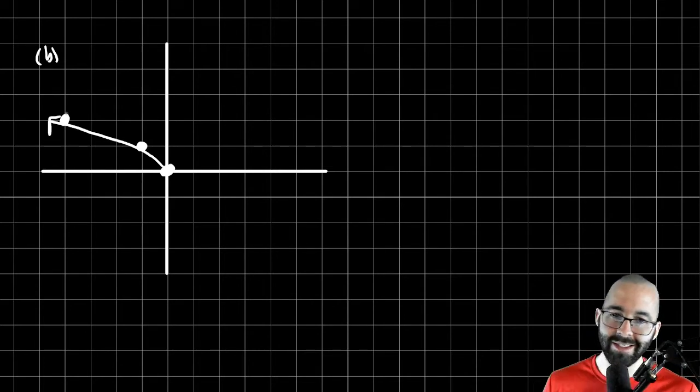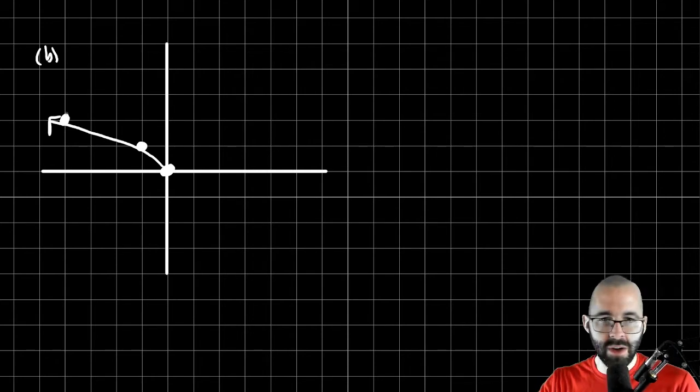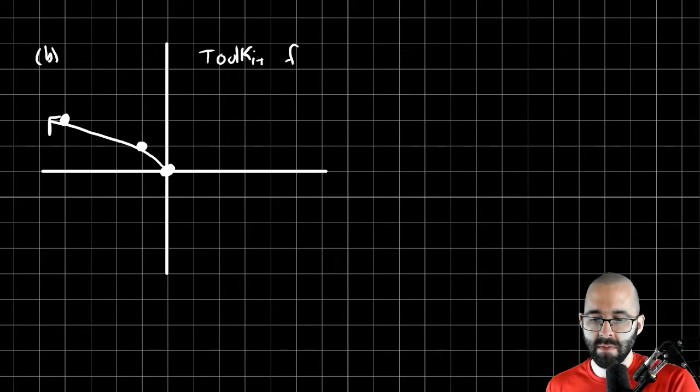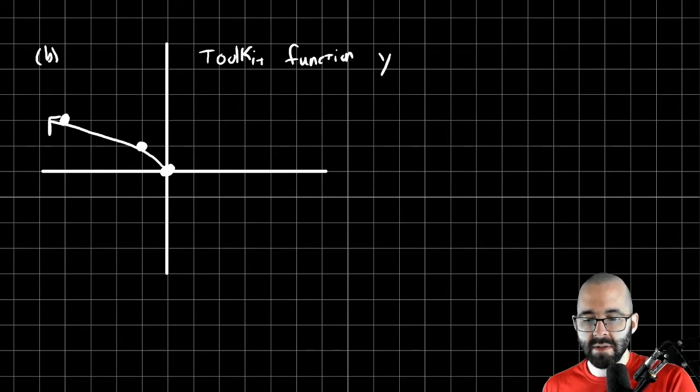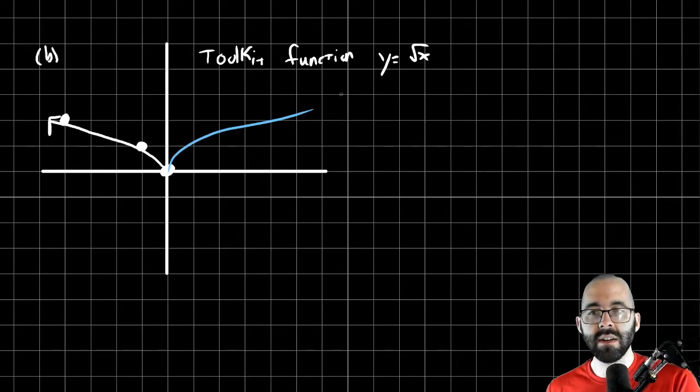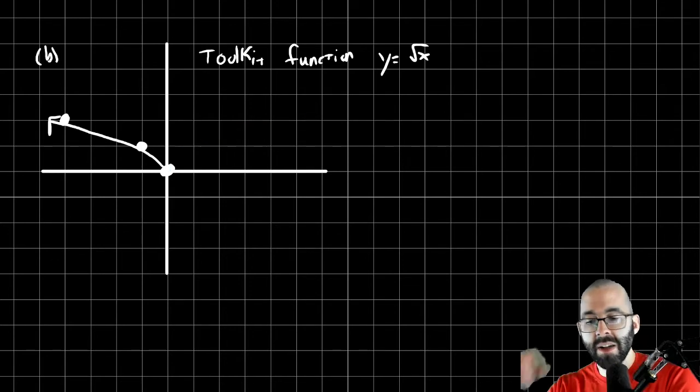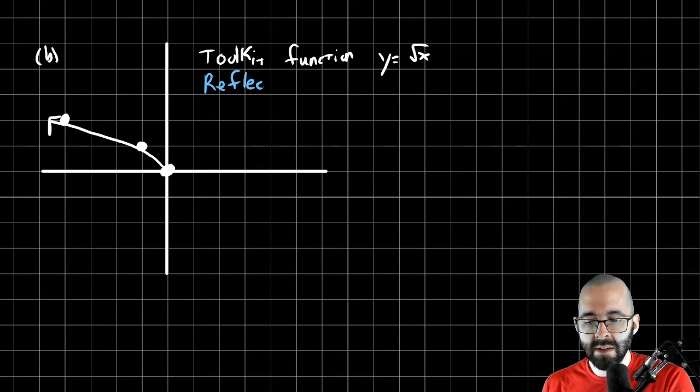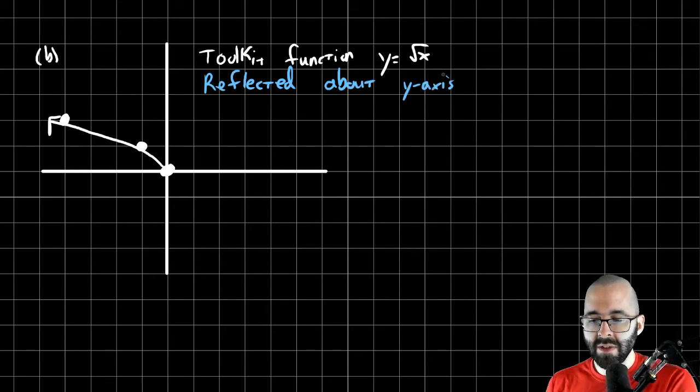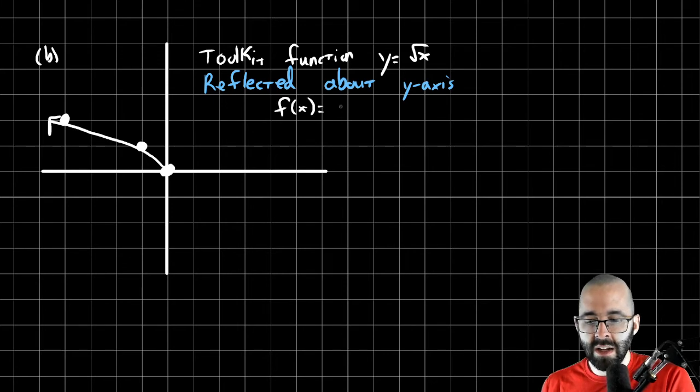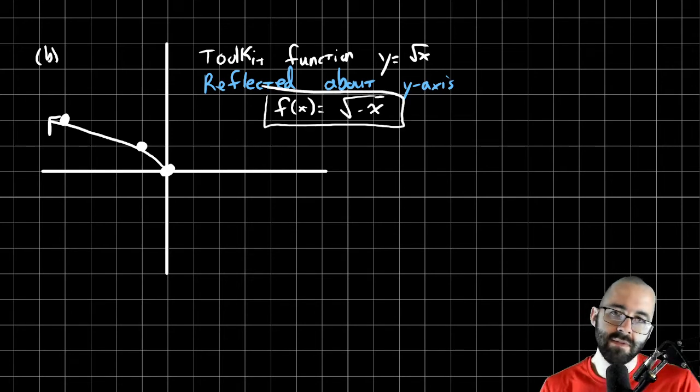I won't tell you what kind of function is because I would spoil it. So pause the video. Look through your notes. Try to find what toolkit function this is. You should have gotten that this is the square root of x. But the square root of x normally is over here. What's happening? We're reflecting it horizontally. We're reflecting it about the y-axis.